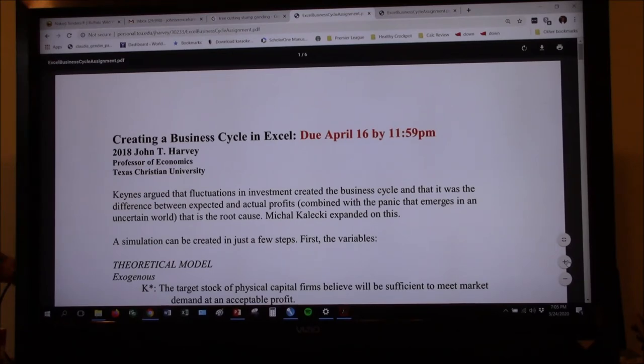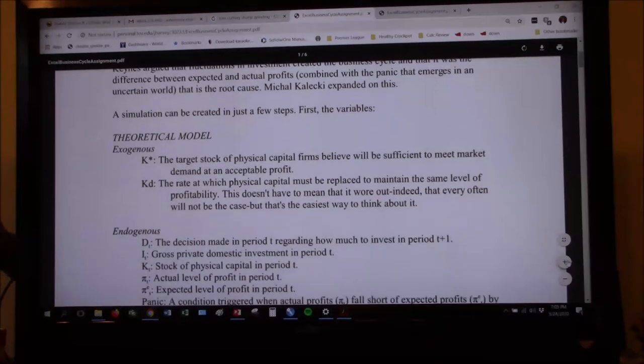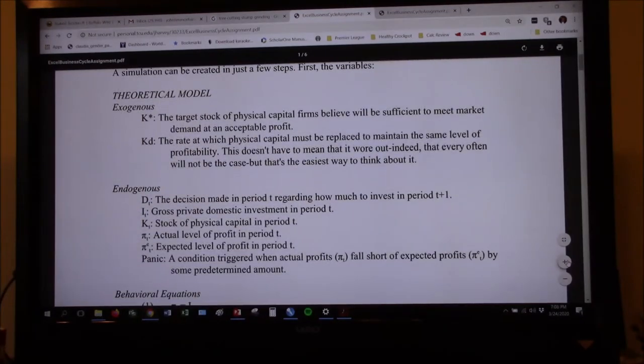So a simulation can be created in just a few steps. First, the variables. So what the instructions do first is go through and explain what all the variables are. Here's the theoretical model. We have two exogenous variables, two variables that we're just going to say, let's say that number's 10. Let's say that number's 15. And then the endogenous ones will be generated within the system.